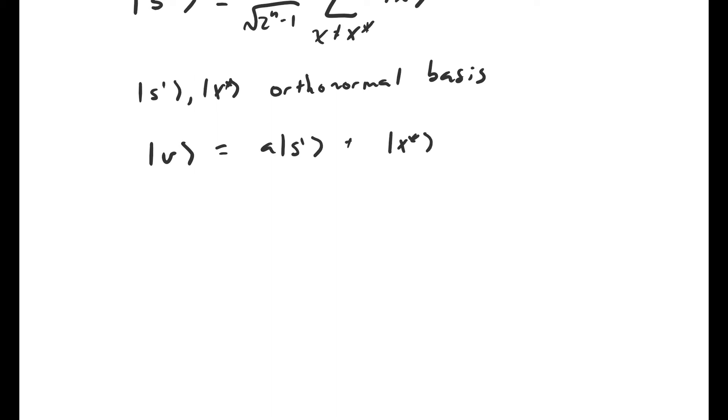When O acts on this vector, it leaves the s prime piece unchanged, and it negates the coefficient in front of the x star piece. And of course, this is still a linear combination of the basis vectors s prime and x star. So O acting on v produces another vector in the space spanned by x star and s prime.